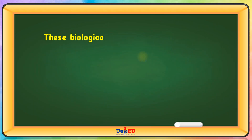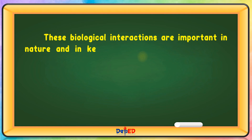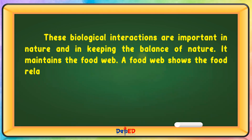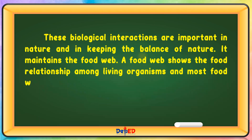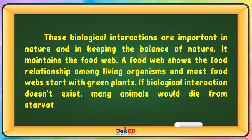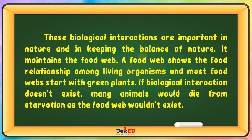These biological interactions are important in nature in keeping the balance of nature. It maintains the food web. A food web shows the food relationship among living organisms, and most food webs start with green plants. If biological interactions don't exist, many animals would die from starvation as the food web wouldn't exist.